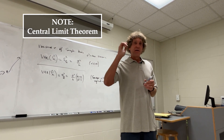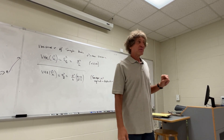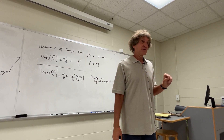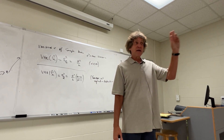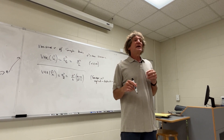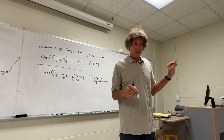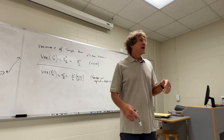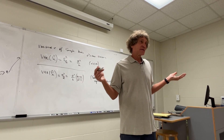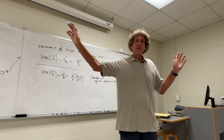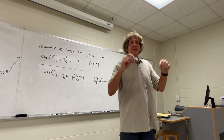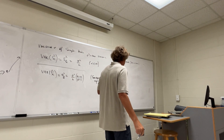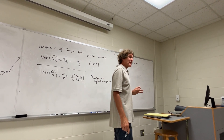Here's what the central limit theorem says: it doesn't matter what the statistics of the individual components are. If you have samples of anything that are statistically independent, and you take a large number of samples - regardless of the individual density function - if you add them together, like z = x + y and all the rest, and look at the density function of that sum, it will become Gaussian.